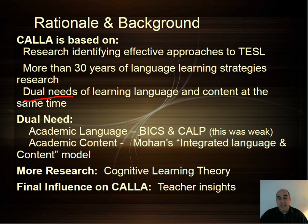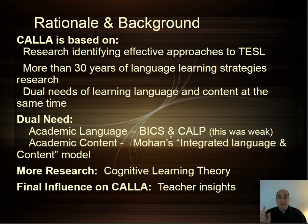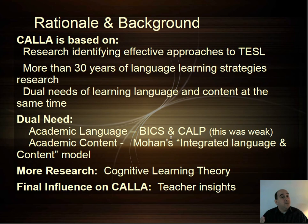Students have academic language needs — they need BICS, basic interpersonal communication skills, and they need CALP, cognitive academic language proficiency: the specific language and vocabulary used in the academy, in a particular science class, or whatever class they're in. And then there's the actual academic content itself. Whether you're teaching mathematics, geography, world history, or chemistry, the content also needs to be taught. So the teacher using this CALLA approach needs to have knowledge in both areas.